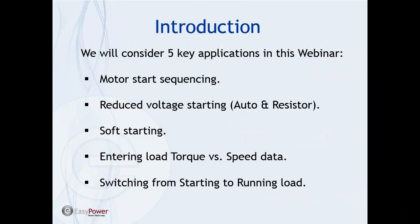Today we're going to be looking at five key applications in motor starting. The first one will be motor start sequencing. Next will be reduced voltage starting — we'll look at two examples: an auto transformer and a resistor start. Then we'll look at soft starting, which is built into the motor itself. We'll also look at entering load torque versus speed data, and how to switch from starting to running load, allowing two different torque versus speed curves.